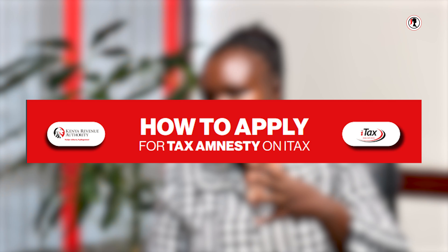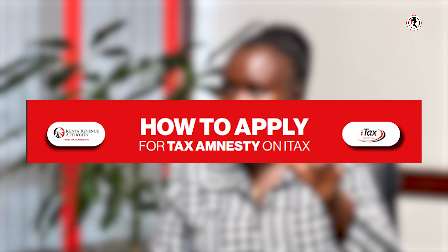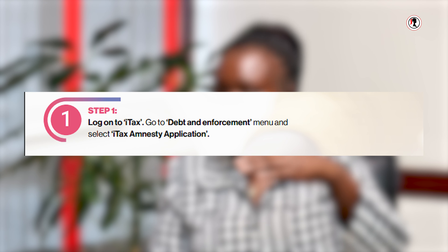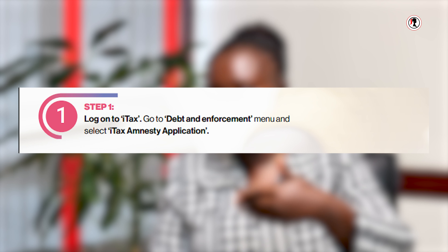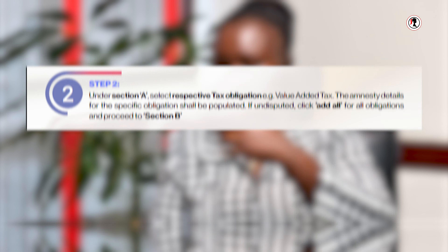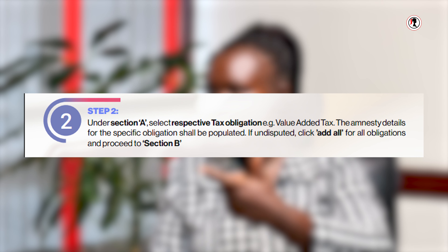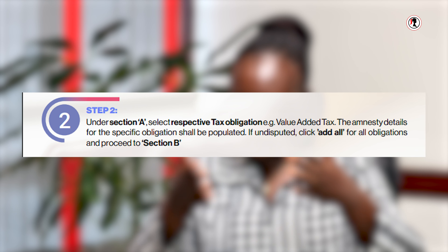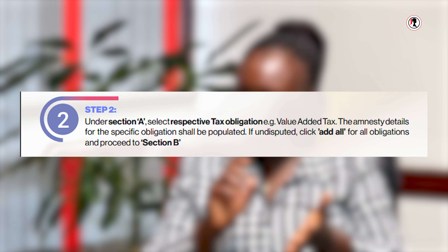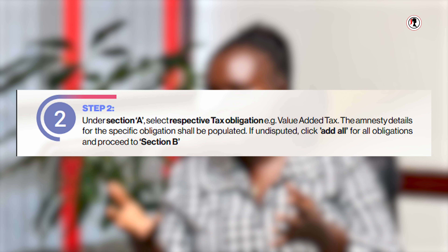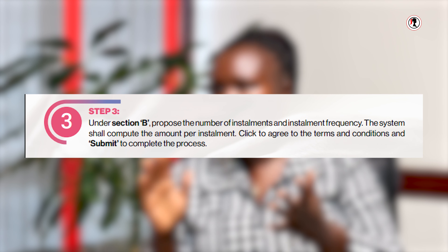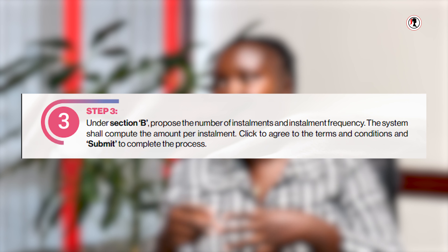For a taxpayer to get the amnesty, they just need to log into their iPage and make the application. You'll find a tab written 'Data Enforcement' and below it there is 'iTax Amnesty Application.' Once you apply, you select the tax obligation — whether it's VAT or Pay As You Earn — and it will show you all your debts. Select the periods you feel you need to apply for amnesty, then go to the second tab.